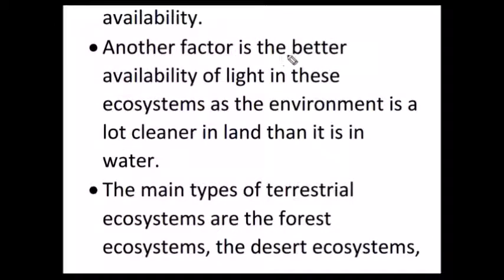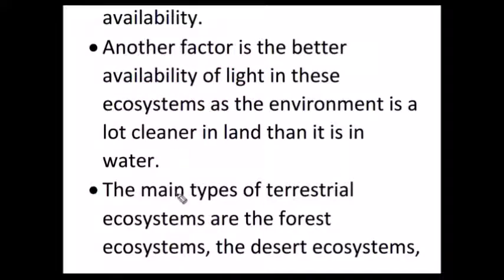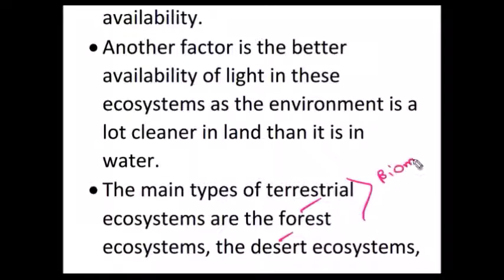Another important factor in the terrestrial ecosystem is the availability of light. These factors determine the diversity in the terrestrial ecosystem. Terrestrial ecosystems can be further classified into forest, desert, grassland, and other types. We covered about this in the biomes topic, so let us watch our biomes video lecture for more details.